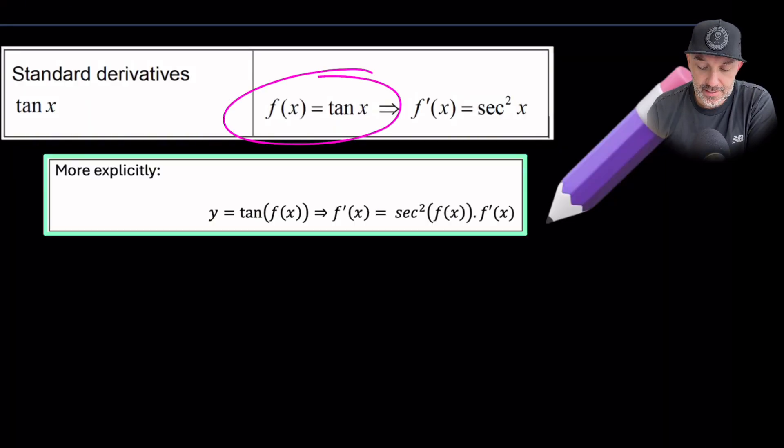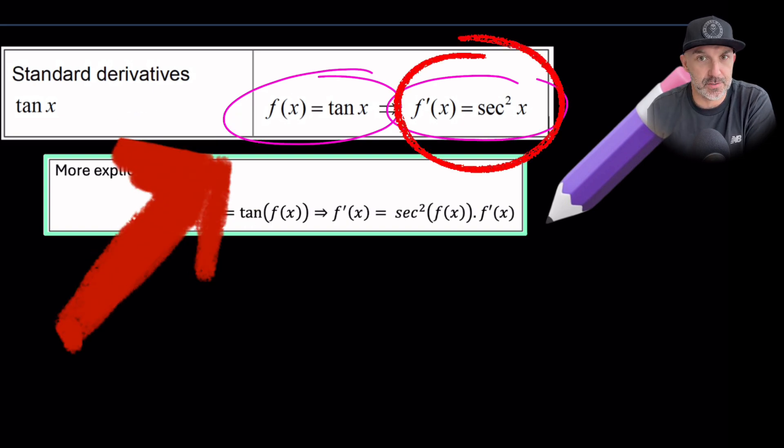The first thing to note is that in the formula booklet, if you have been given one, that the derivative of tan x is actually sec squared x.